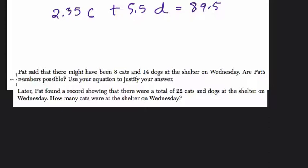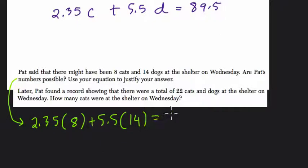So here, I'll do this part here. So $2.35, we'll use our equation, times 8 number of cats plus $5.50 times 14 dogs. We want to see, does that actually equal $89.50?